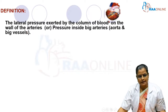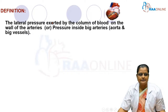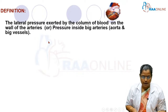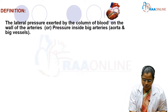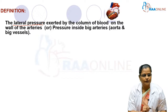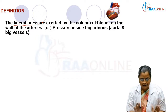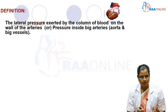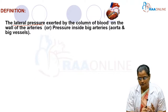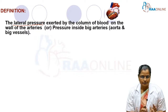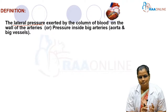What is the definition of blood pressure? It is the lateral pressure exerted by the column of blood on the wall of the arteries. The lateral pressure is very important — it is not the dynamic pressure. It is just the pressure inside the big arteries, for example the aorta and other big vessels.